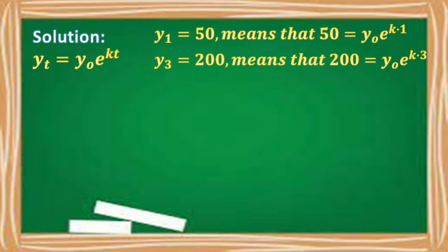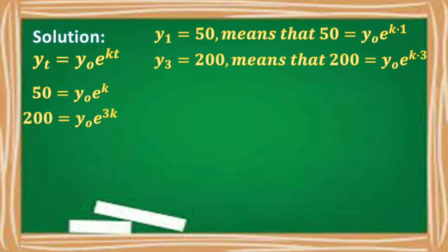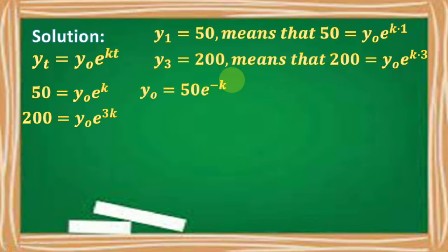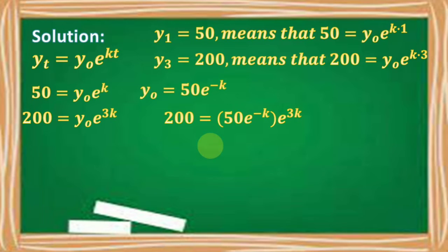From the first equation, we simplify to 50 = y₀ · e^(kt). From the second, we simplify to 200 = y₀ · e^(3kt). Rearranging the first equation by dividing both sides by e^(kt), we get y₀ = 50 · e^(−kt). Substituting into the second equation gives 200 = 50 · e^(−kt) · e^(3kt).